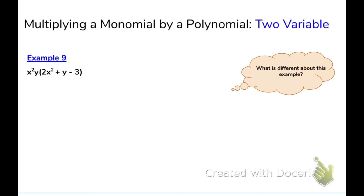Now we have a monomial with two variables multiplying a polynomial. Remember, a monomial is one term — so this is still a monomial even though it has two variables. Let's look at x squared y times 2x squared. We multiply coefficients: there's an invisible 1, so 1 times 2. Then for each variable: x squared times x squared gives x to the 2 plus 2. The y has an invisible 1, so y to the first power, plus 0 since there's no y in the other term.